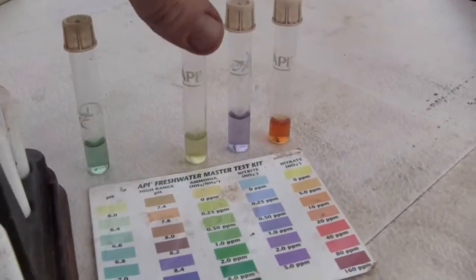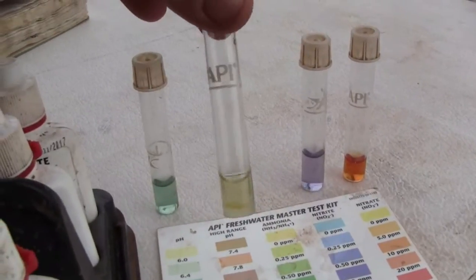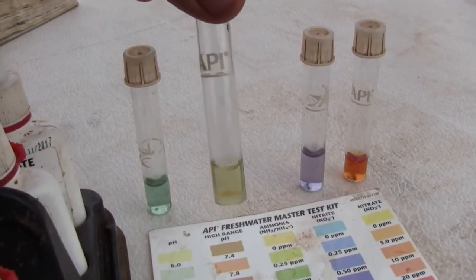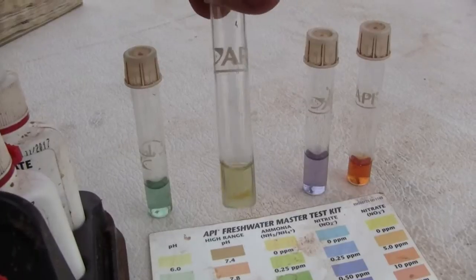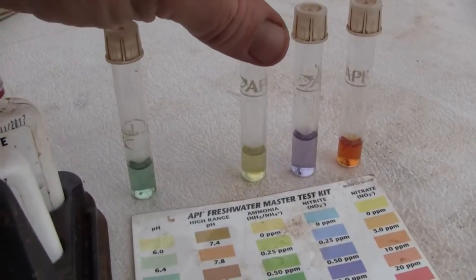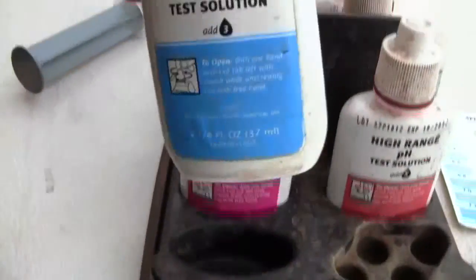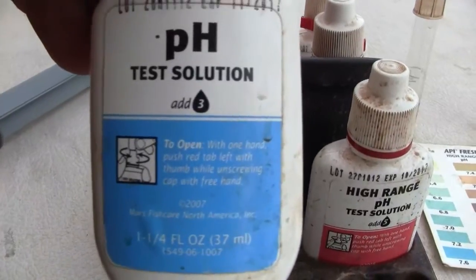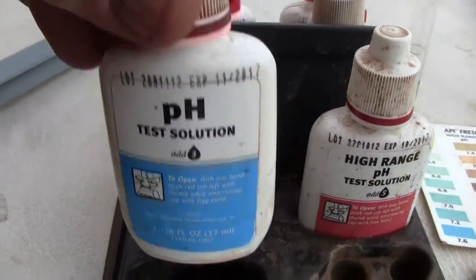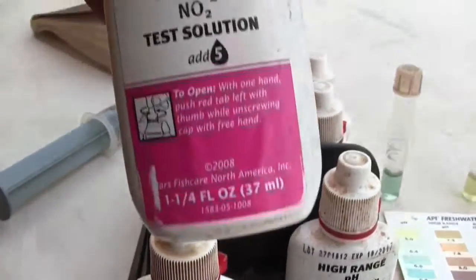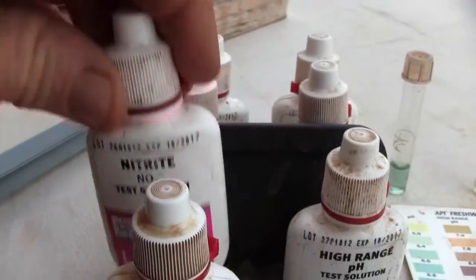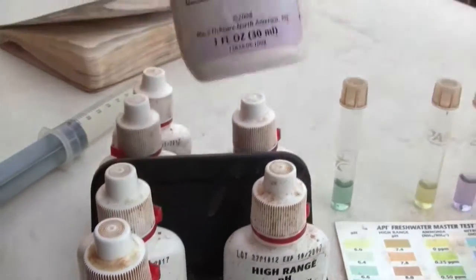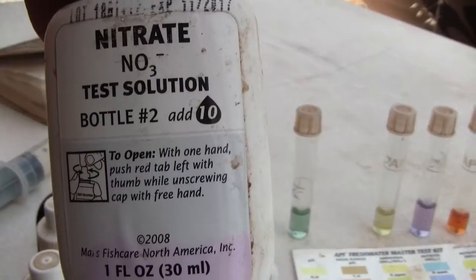the way it's set up is that you add water from your system up to the line and then you add the number of drops that it says. For the pH it says add three drops, for nitrite add five drops, for nitrate add ten drops.